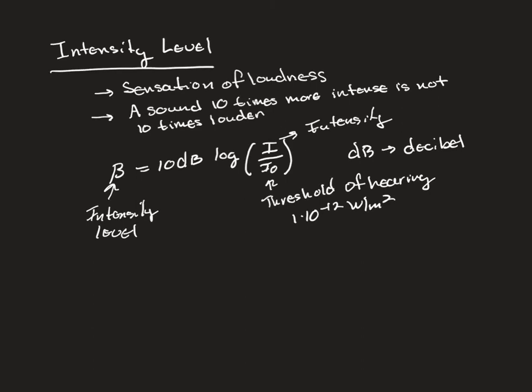So essentially we are comparing the intensity of the sound we're interested in to the lowest intensity of the human ear can perceive, so this is rated for humans, and then converting it into intensity level units. And notice here, as I said before, it's a logarithmic relationship, so you're seeing base 10 log here.